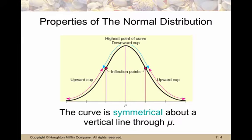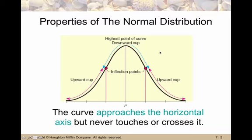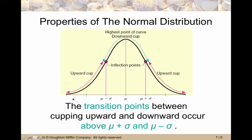The curve is symmetric or symmetrical about the vertical line through mu, the mirror images of each other, the two sides. And the curve approaches the horizontal axis but never touches or crosses it. It just gets closer and closer. The transition points are inflection points between curving upward and downward. See, this part, it curves upward and then it starts to curve downward and curves downward and then starts to curve upward.